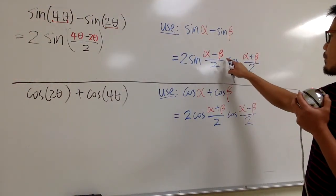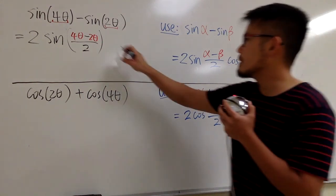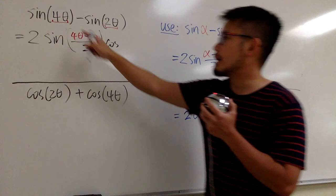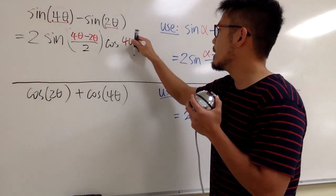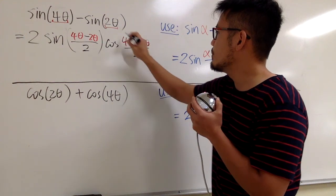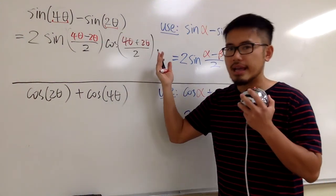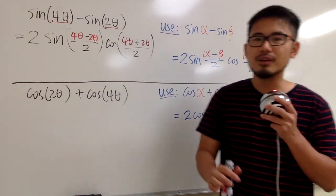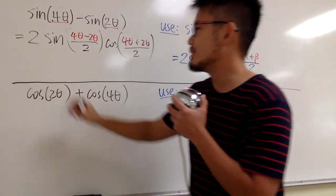And then after that, we are going to multiply by cosine alpha plus beta. So that means we have 4 theta plus 2 theta, and then over 2, like this. And we do not stop right here. We are going to work out the inside and then simplify, combine terms, things like that.